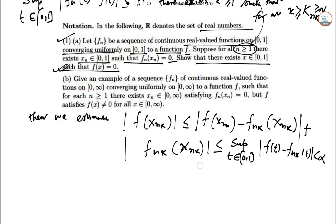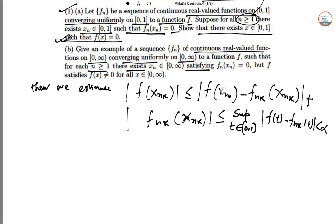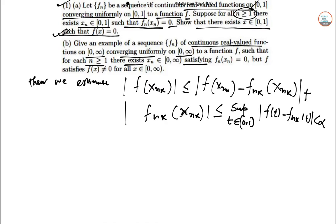Give an example of a sequence Fn which is continuous in the real valued function [0,infinity) converging uniformly on [0,infinity) to a function F such that for each N greater than equal to 1 there exists Xn satisfying that Fn of Xn equal to 0 but F satisfied Fx that is cannot equal to 0. For X [0,infinity).